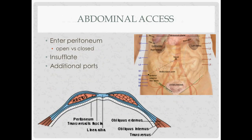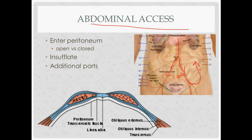For abdominal access — covered more fully in the abdominal access lecture — the aorta divides at the navel at T10, with the inferior epigastrics branching off the external iliac artery and traveling upward. To enter the peritoneum, there are two techniques: open or closed.